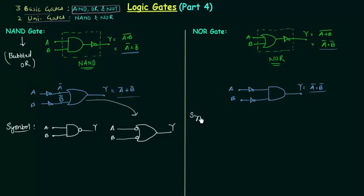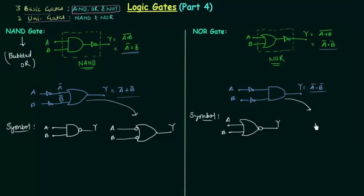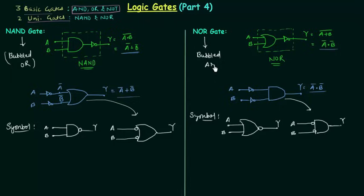Now the symbol for NOR gate. First we make an OR gate and then we put a bubble at the end. The alternative arrangement is represented as an AND gate with 2 input bubbles — inputs A and B with output Y. Because of this representation we call the NOR gate a bubbled AND.